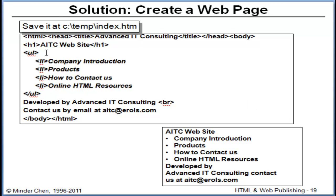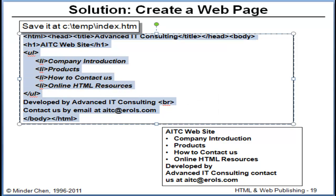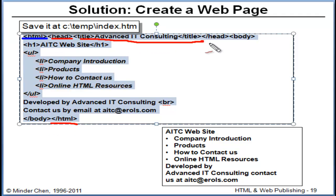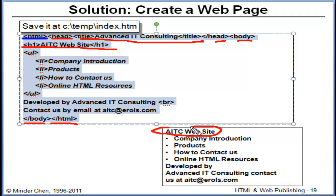Let's look at an example of a slightly more complicated HTML page. We have the HTML tag and end of HTML. We have the head section with the title in it. Then there's the body tag and the end of the body tag. This is a section heading, which will show up as the RITC website heading, usually displayed in a bigger font.